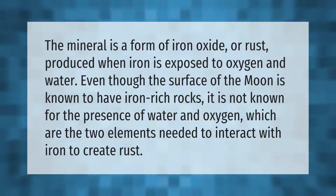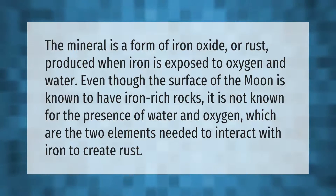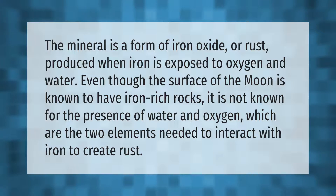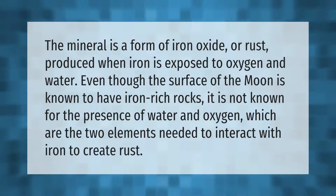The mineral is a form of iron oxide, or rust, produced when iron is exposed to oxygen and water. Even though the surface of the moon is known to have iron-rich rocks, it is not known for the presence of water and oxygen, which are the two elements needed to interact with iron to create rust.